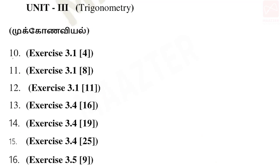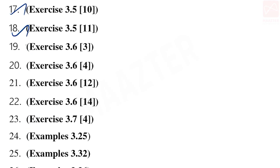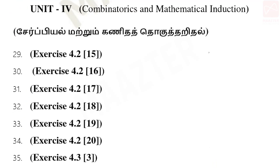Next, Unit 3: Exercise 3.1: 4th sum, 8th sum, 11th sum; then Exercise 3.4: 16th sum, sum number 19, sum number 25; then Exercise 3.5: 9th, 10th, 11th. Then Exercise 3.6: 3rd sum, 4th sum and 12th sum; then 14th sum; then Exercise 3.7: 4th sum. Then examples: Example 3.25, 3.32, 3.36, 3.38 and Example 3.71.